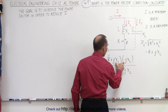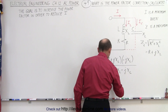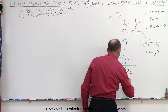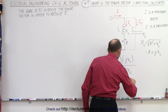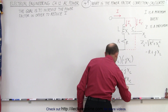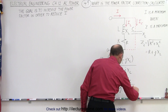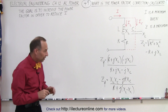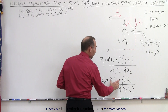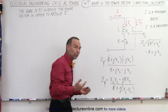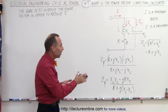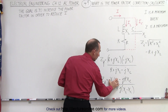Working that out, since j squared equals negative one, the negatives cancel and we get X_L times X_C minus j times R times X_C, all divided by R plus j times (X_L minus X_C). Instead of leaving it in that form, we're going to take the magnitude of the impedance using the square root of the sum of the squares of the individual components.